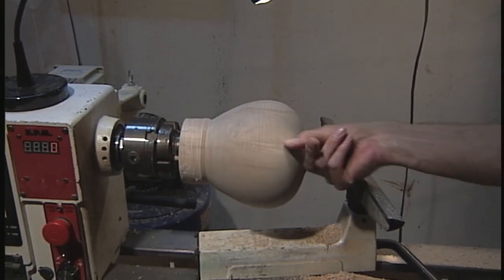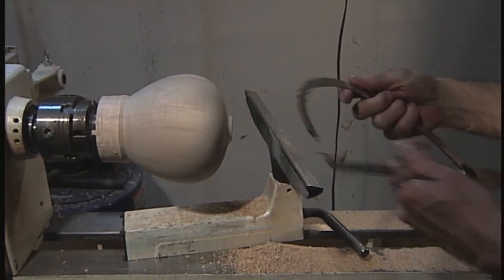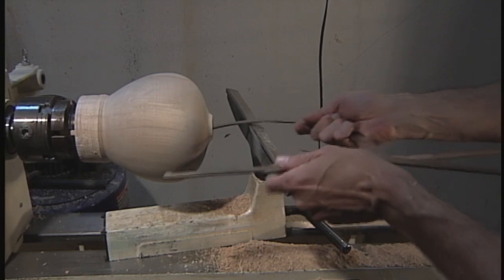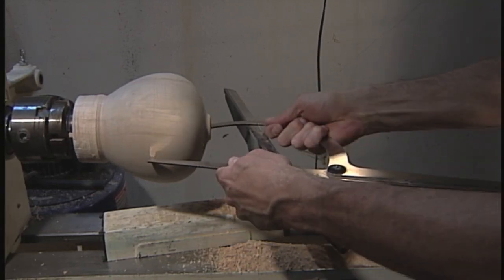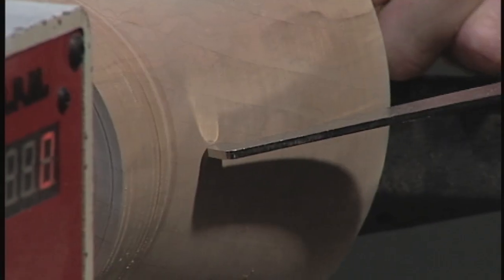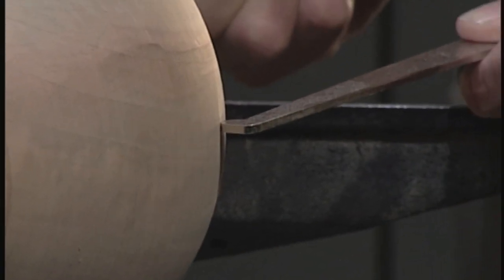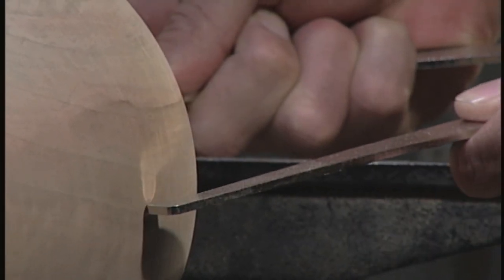When you start getting the walls pretty well thinned down a little bit and you reach in there and you feel it, then you move on to the calipers, and you're reaching in there. What I'm looking at is down here, and that shows me how thick the walls of the vessel are. If you're going to be doing some carving, that's about right. If you're leaving it as is, that's probably just a little bit thick.